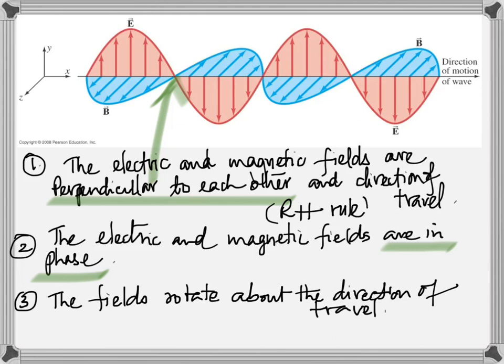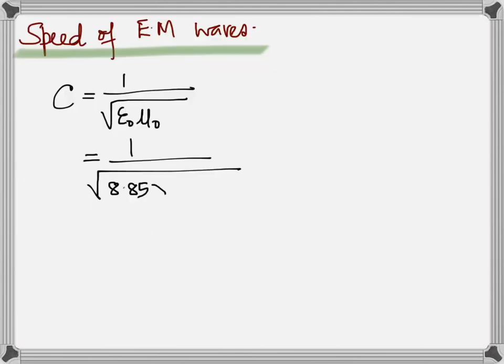The direction of propagation can be found using the right-hand rule: point fingers along the electric field E, curl toward the magnetic field B, and the thumb gives the direction of propagation. Also, Maxwell derived that the speed of electromagnetic waves, c, equals 1/√(μ₀ε₀), where μ₀ is the permeability of free space (a magnetic property) and ε₀ is the permittivity of free space (an electrical property).